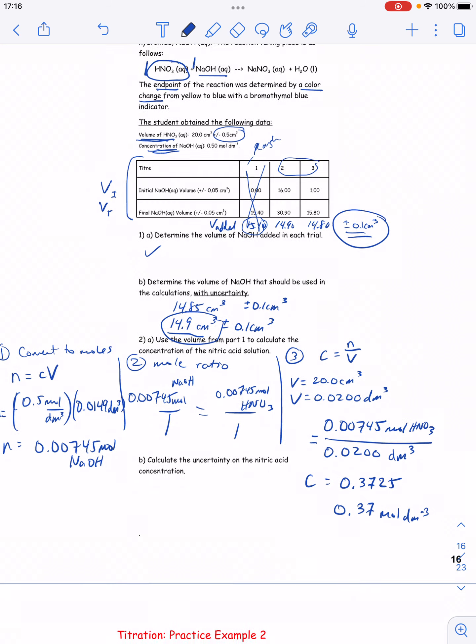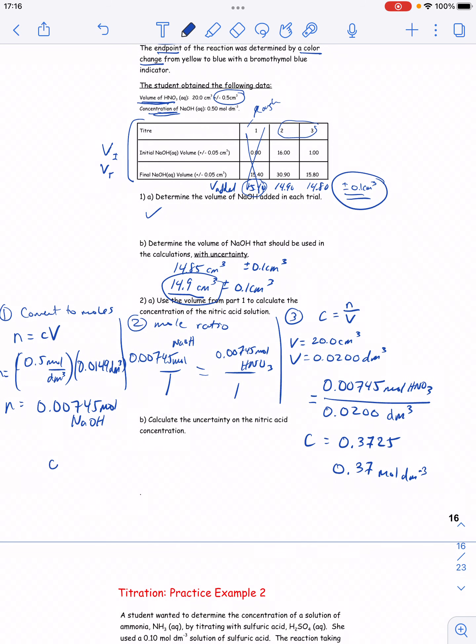And so I take my 0.1 cm cubed out of 14.9 for the NaOH, and I take the 0.5 out of the 20, and I get each one of those as a percent. So this one is 0.7% uncertainty. This one is 2.5% uncertainty.